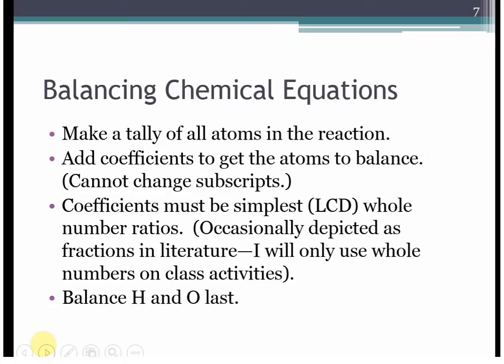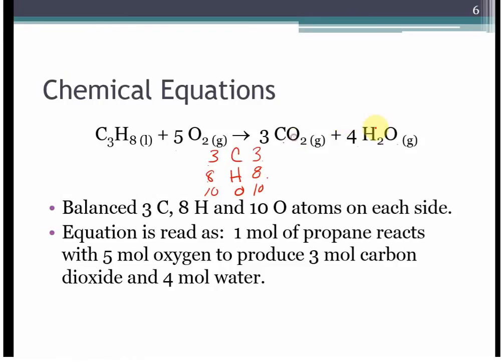The way that I balance a chemical equation is I'm going to make a tally. Usually, I do it right under the arrow of all the atoms that are there. Remember, you can't change your subscripts. The only thing you can do is add a coefficient. The coefficients need to be the simplest or the lowest common denominator of whole number ratios. A lot of times in literature, you'll see fractions. I tend to stay away from those. On my tests, I will only give you answers that have whole numbers. And then, just one little tidbit, generally just to make your life easier, don't do hydrogen or oxygen until last. If you look back here, oxygen is in two molecules here. It just ends up being easier to keep something like that until the end.